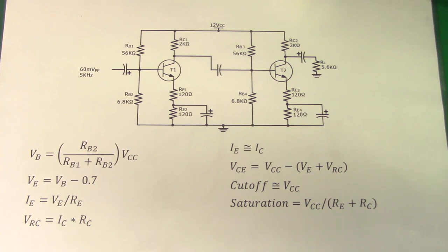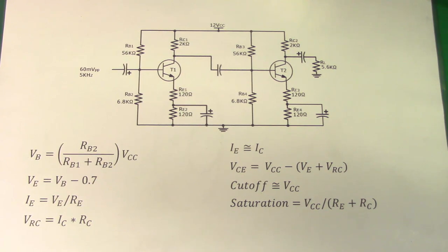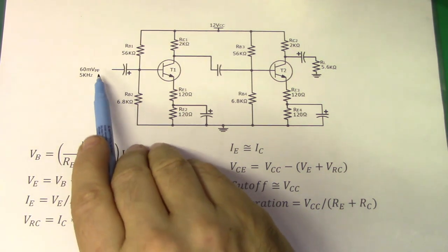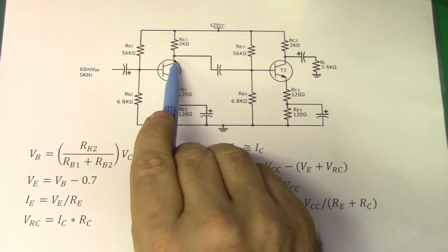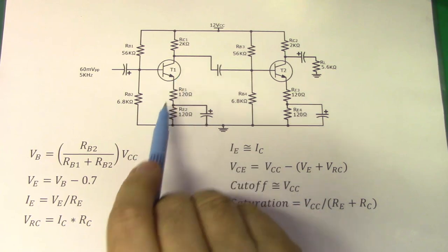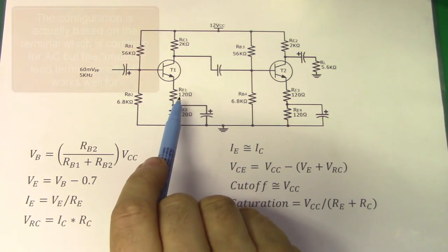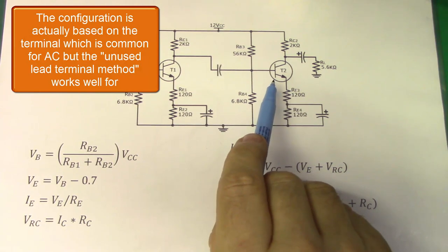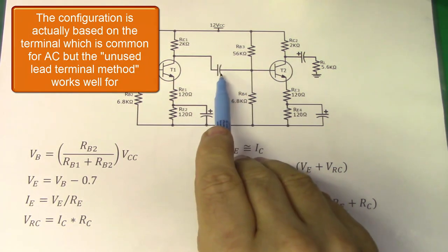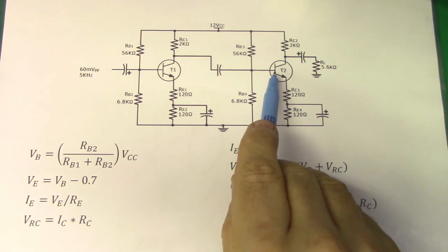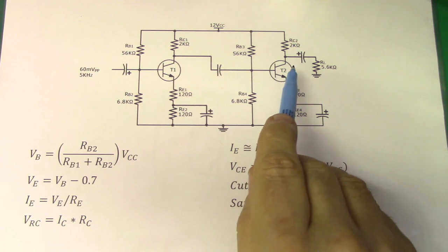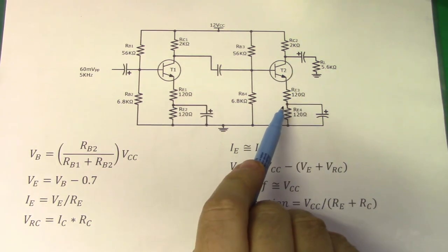Both of these are common emitters. Remember, you can always identify what kind of configuration you have by looking at which lead on the transistor does not have an input or an output. We're going to apply 60 millivolts peak as input, our output is taken off of the collector, and since the emitter has no connection in or out, we call this a common emitter. The second stage takes the input from the first stage, capacitively coupled, so the base has a connection and the output is on the collector — another common emitter circuit.